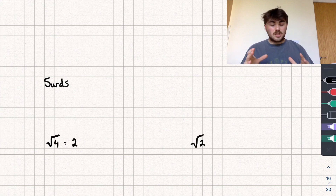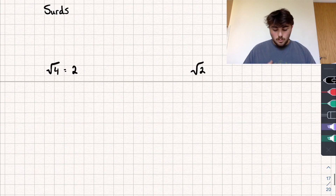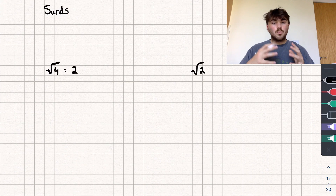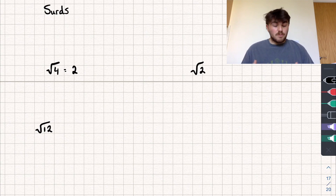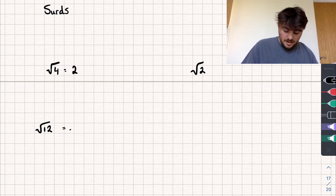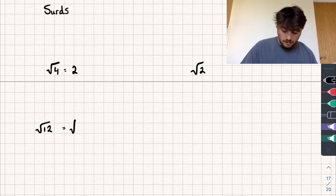So as well as knowing what a surd is, we need to know some rules that we can use with surds to help us answer questions. The first one is going to involve multiplication. We'll look at a concrete example first with numbers. Say we had the square root of 12 — could we rewrite this in any other way? We could say it's the square root of 4 times 3, because 4 times 3 is 12. So it's the square root of 4 times 3.